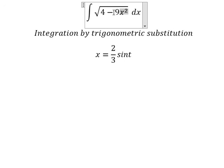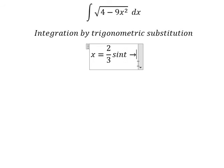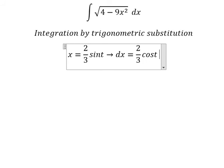And later we simplify the square root. So we differentiate for both sides and you get dx equals 2 over 3 cosine t dt.